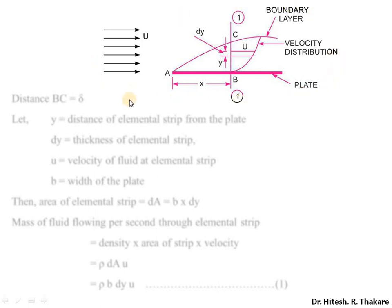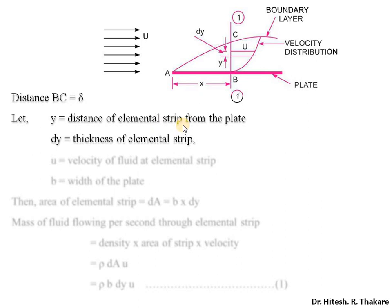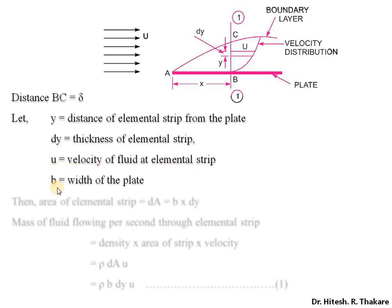To derive this expression, we are going to use the same diagram and the same approach, so that derivation will become easy. This is the same plate to which the flow is approaching with velocity U. We are considering an elemental strip having thickness dy, located at a distance y from the surface of the plate. Boundary layer has been formed, a velocity gradient is observed, and the distance BC is equal to boundary layer thickness delta.